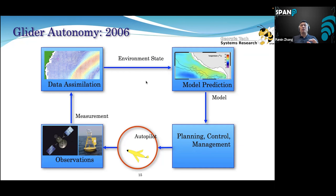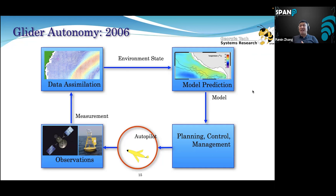The first version of this software was done when I was a postdoc at Princeton in 2006. Over the years we've been improving on this autonomy software, and just last week we got a Python version, which we're about to test on the Georgia coast maybe next week or two weeks from now. We've been working on this software for more than 15 years and it works pretty well — we've done a lot of deployments.